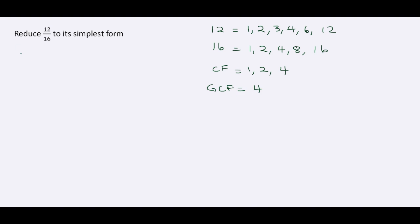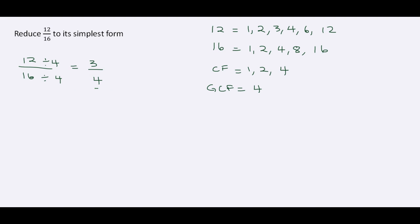So with this approach, we have 12 over 16. We divide the numerator by 4 and divide the denominator also by 4. 12 divided by 4 is 3, and 16 divided by 4 is 4. So the reduced fraction is 3 over 4.